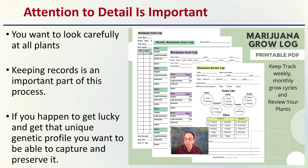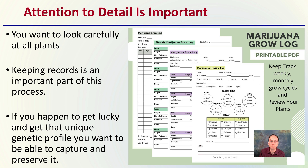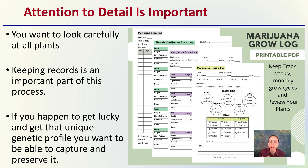Attention to detail is important here. You want to look carefully at all plants and keep good records as an important part of this process. If you happen to get lucky and find that unique genetic profile, you want to be able to capture and preserve it and not lose track of it — because it might be truly that one in a million.